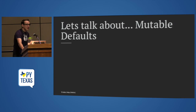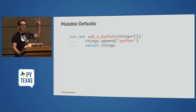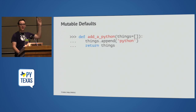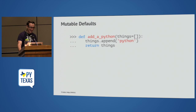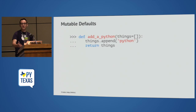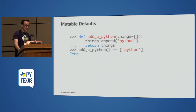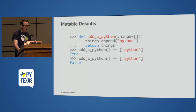Let's talk about mutable defaults. I have a function called add_a_python that takes a variable argument 'things', which is a list. The very first thing I want to happen is to take that list, add one value to it, and return it. I run my function without passing it anything, and it comes back with just a list containing one value. I run it again — and what?